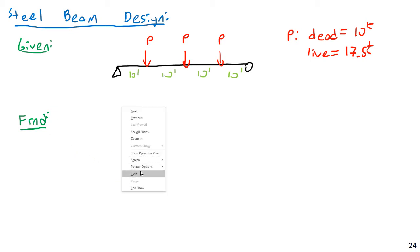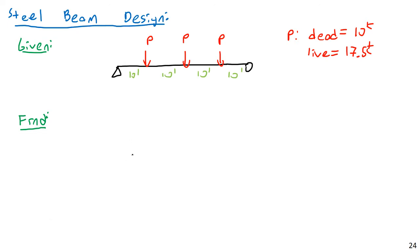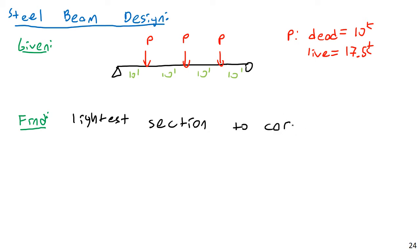What we want to find is the lightest section to carry these loads. We want to select the lightest steel section to carry these loads, and we'll go ahead and assume a W section for simplicity.